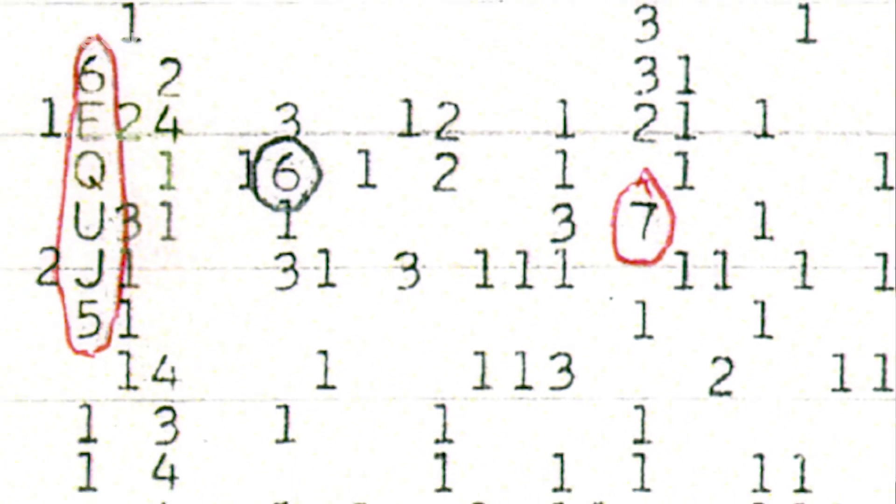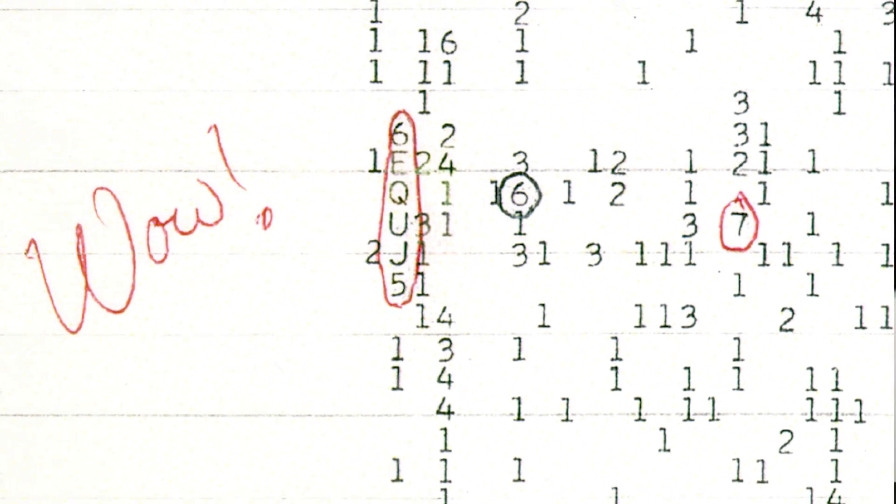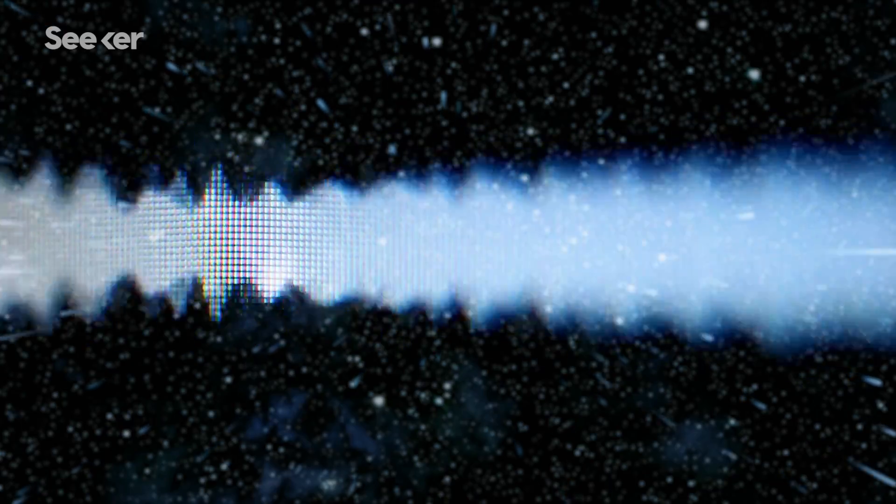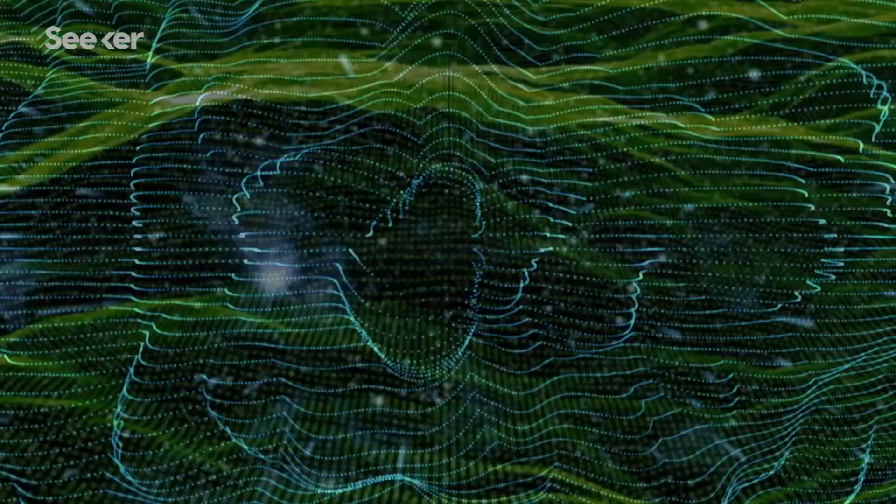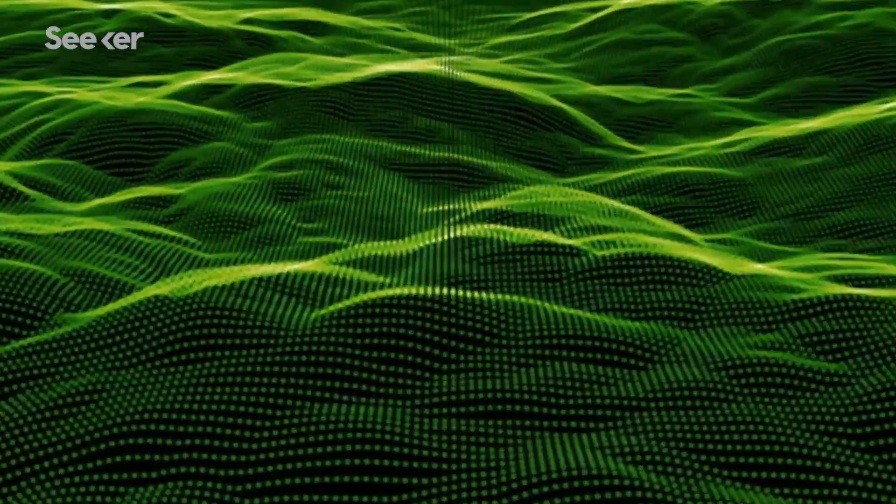The day after an observing run, one time, one of the scientists came in and looked at the output from this dot matrix printer and saw some sort of evidence of a signal on there and drew a circle around it and wrote WOW. Today, if we saw that signal, we would have so much more data on the signal that we could very rapidly identify it as interference.